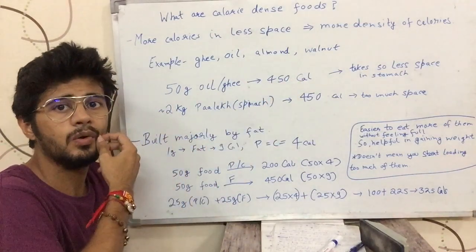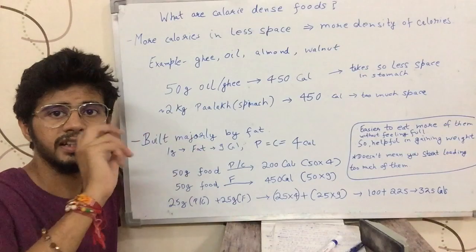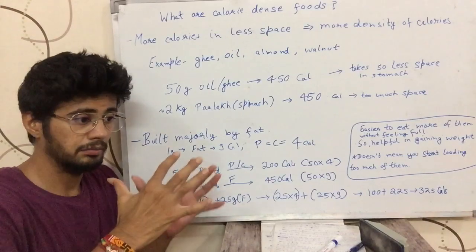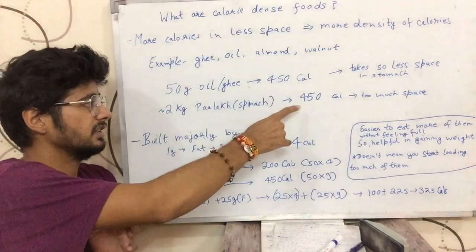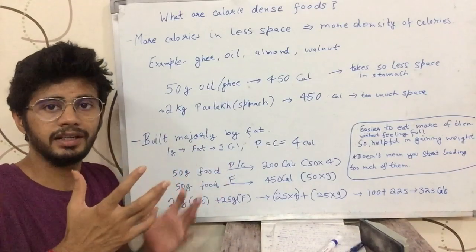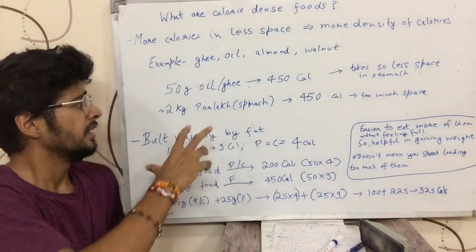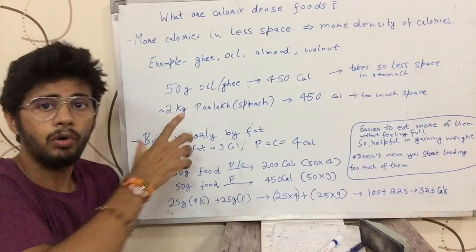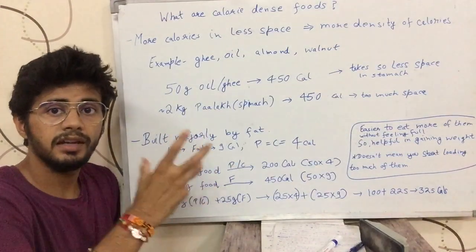Now if you need to take 450 calories of wheat, you'd need 2 kilograms of wheat. If you drink 50 grams of fat, it can fit easily in your belly. But 2 kilograms of wheat takes a lot more space in your belly. The calories are equal — around 450 calories — but 50 grams of fat is less in volume while 2 kilos of wheat takes a lot of space.